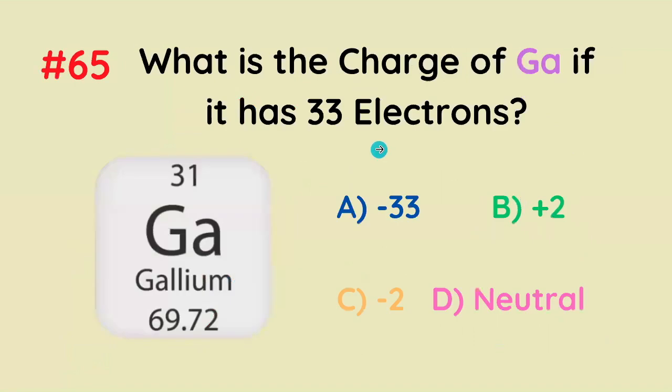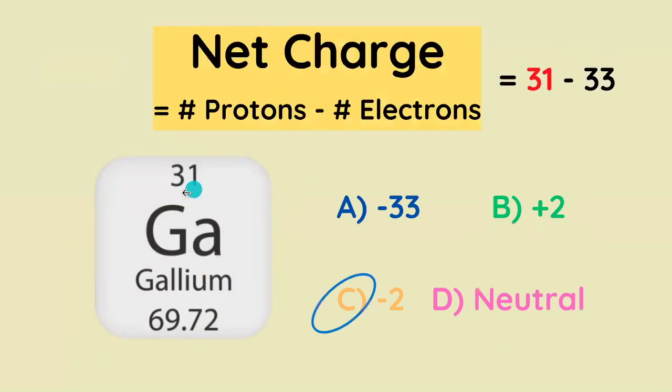What is the charge of gallium if it has 33 electrons? It has 31 protons, and so if it's got 33 electrons, it's got to have a negative 2 net charge.